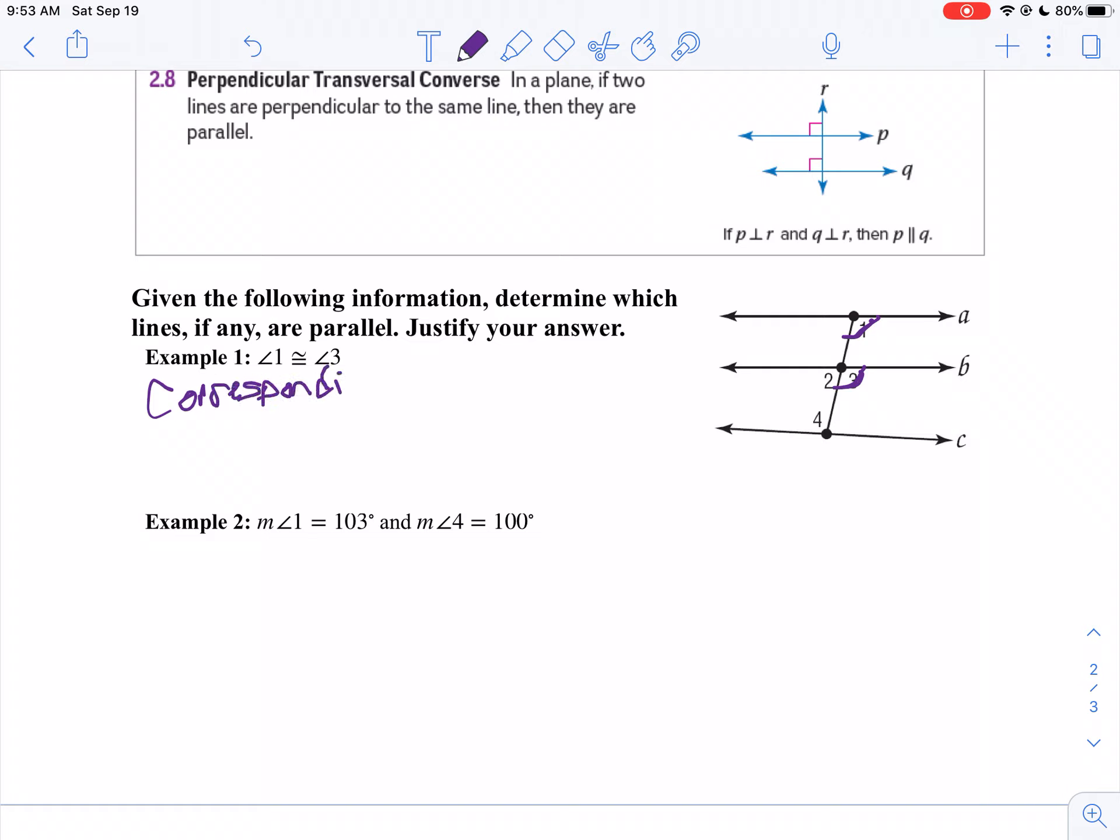You throw the word converse in there when you're showing the lines are parallel. When you know the lines are parallel, we don't use that word converse.